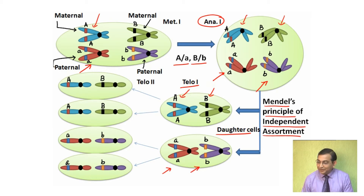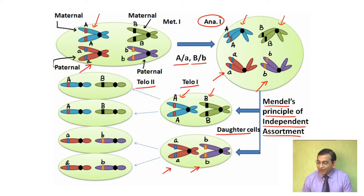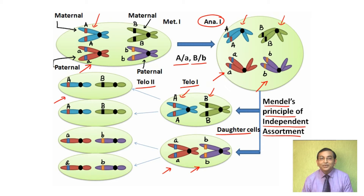Ultimately, at telophase two, four gametes are formed. Half of the gametes carry capital A and capital B alleles, and the other half carry small a and small b alleles.